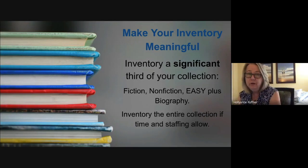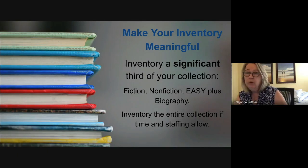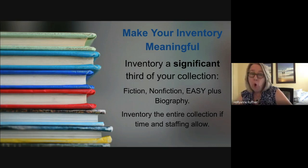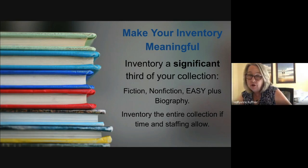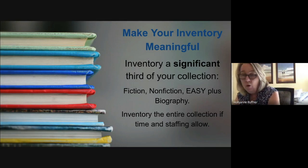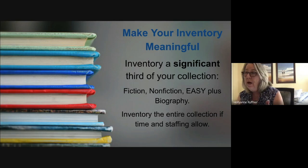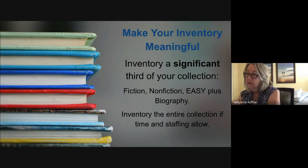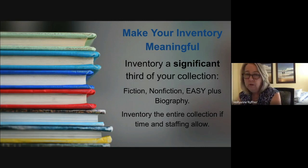Please inventory a significant third of your collection each year. School board policy actually states that one third of the collection needs to be inventoried on a rotating basis — a three-year rotation. That doesn't mean you only inventory every third year; it means you do something every year, one third every year. You need to record that pattern in your collection development plan: in 2020 I inventoried fiction, in 2021 nonfiction, in 2022 easy, and in 2023 fiction again — keeping it in a cycle so that one third of the collection is inventoried over a period of three years.